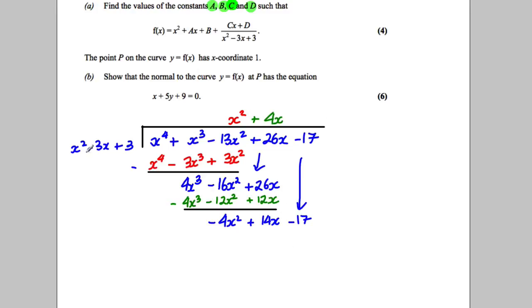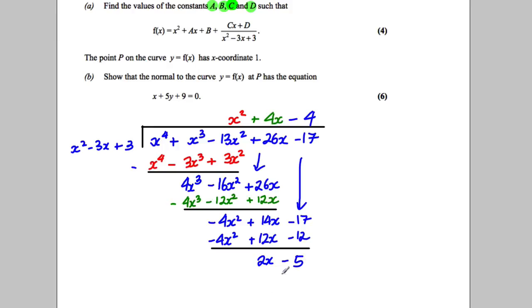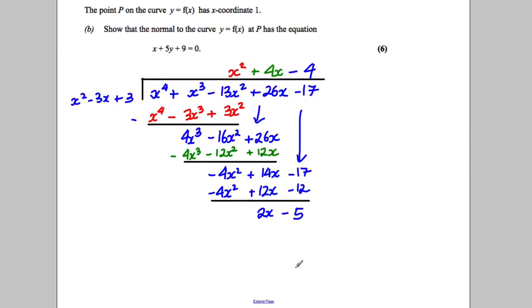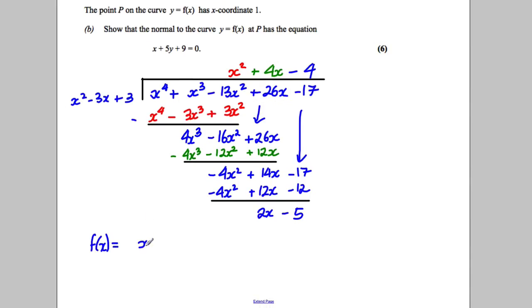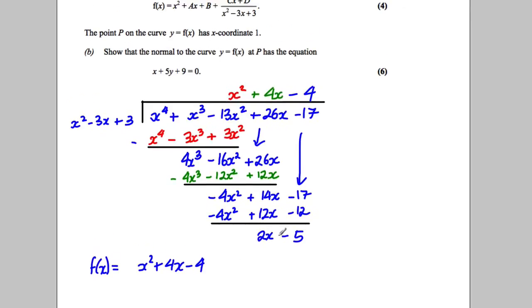What do I need to get −4x²? I need −4 on top. Negative 4 multiplied by x² − 3x + 3 gives −4x² + 12x − 12. Subtracting: −4x² minus (−4x²) is nothing; that gives 2x; and −17 minus (−12) gives −5. So the remainder is 2x − 5. Therefore f(x) equals x² + 4x − 4 plus (2x − 5) over (x² − 3x + 3).